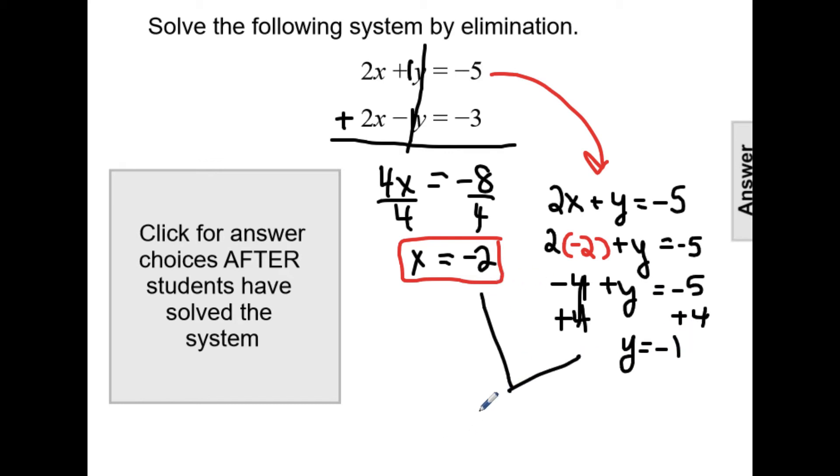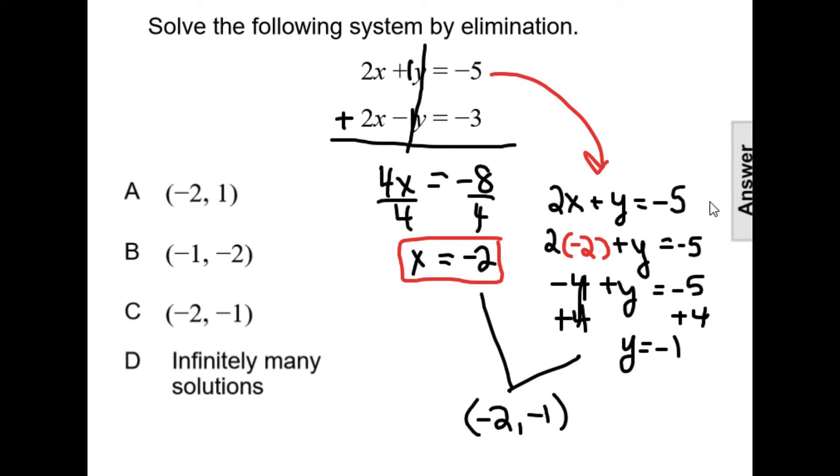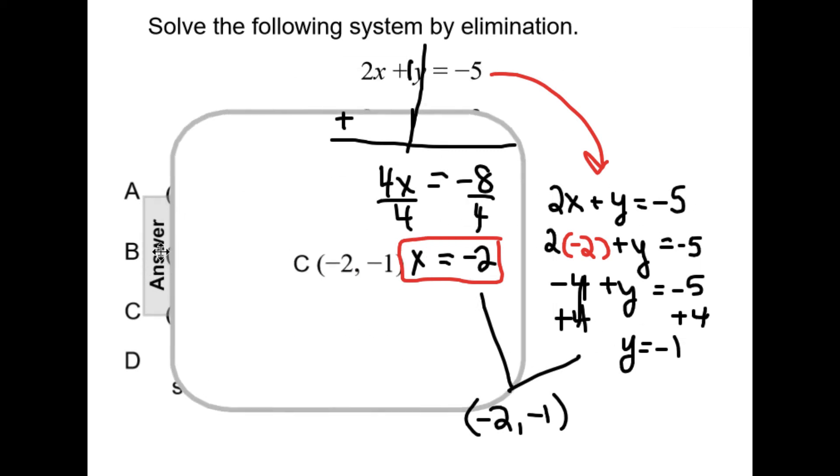Combining my two values to write as one ordered pair would give me the point negative 2, negative 1. Looking at my answer choices, that makes our solution C.